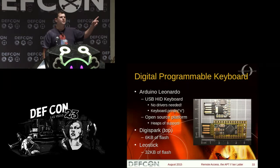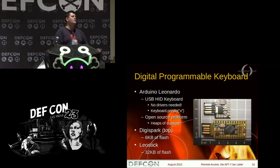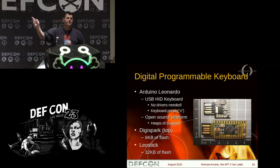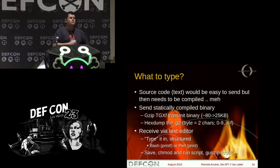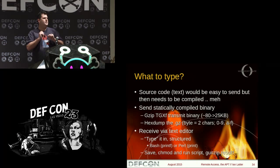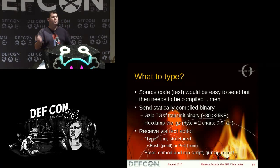If any user-controlled bit is a communications channel and I've got a keyboard, then what we want is a digital programmable keyboard. The Arduino Leonardo comes with USB HID support, which has been available for 20 to 25 years — no drivers are required in the target system for it to be recognized as a keyboard, mouse, or joystick. The digispark has six kilobytes of flash; the Leo stick has 32 kilobytes — about 25 kilobytes of usable space to upload a file. Rather than source code that needs compiling, I gzip a transmit binary, turn it into hex, type the hex into the target system as a script — a Perl or bash script — and let it output that binary on the target system.